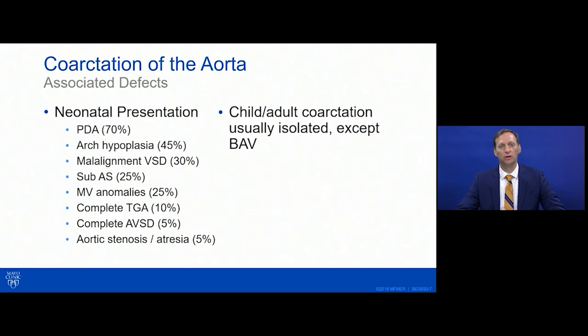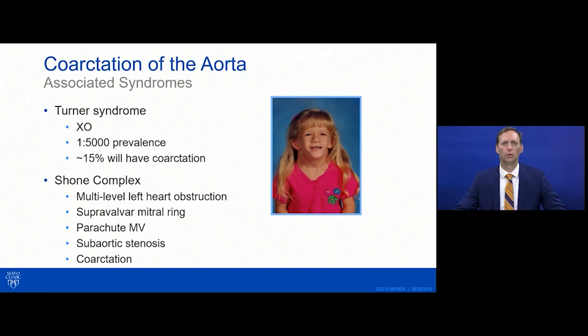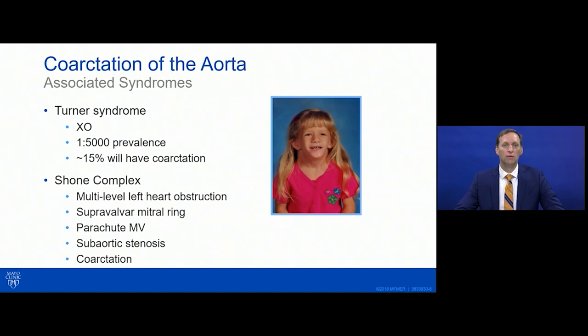Turner syndrome — a single sex chromosome, phenotypically female but infertile — is an aortopathy syndrome. About 15 percent of those with Turner syndrome will have coarctation of the aorta. The American College of Cardiology recommends that all females who have coarctation, particularly diagnosed early in life, should have screening for Turner syndrome due to this association.